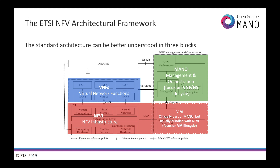This is how the standard NFV architecture looks like, conformed by three layers. The NFV infrastructure, that is the physical environment where virtualization will happen, along with its manager, called the Virtual Infrastructure Manager. The management and orchestration block, focused on the lifecycle management of network services and the virtual network functions that comprise them, and the VNFs themselves, a set of virtualized instances — virtual machines or containers — that group to provide a network function.